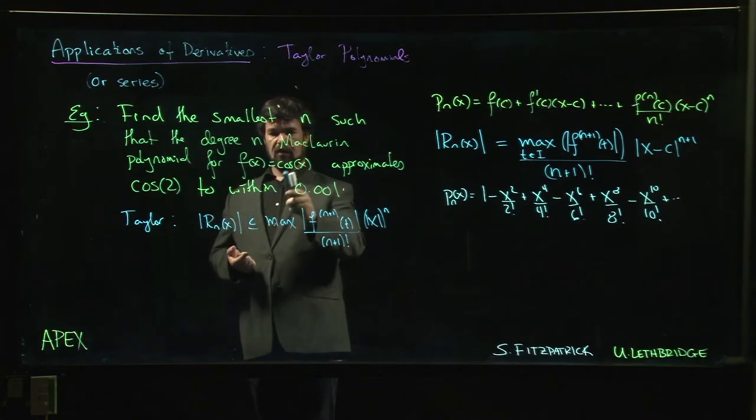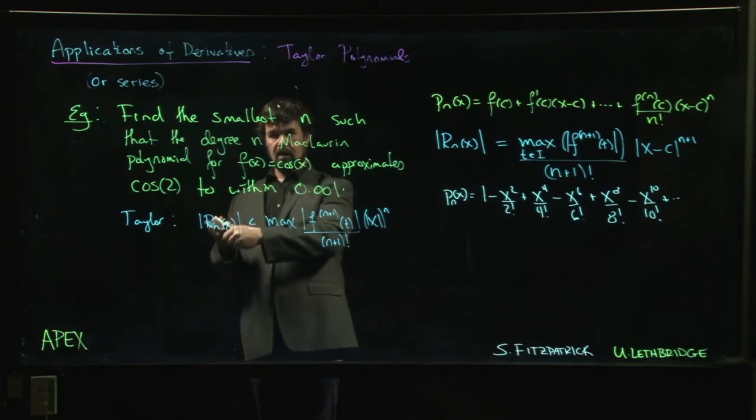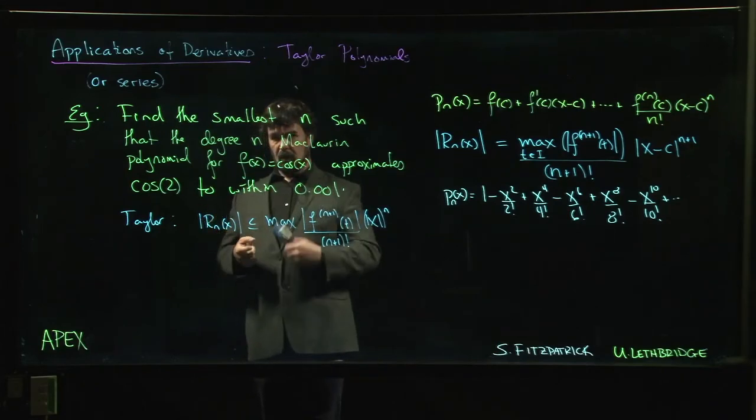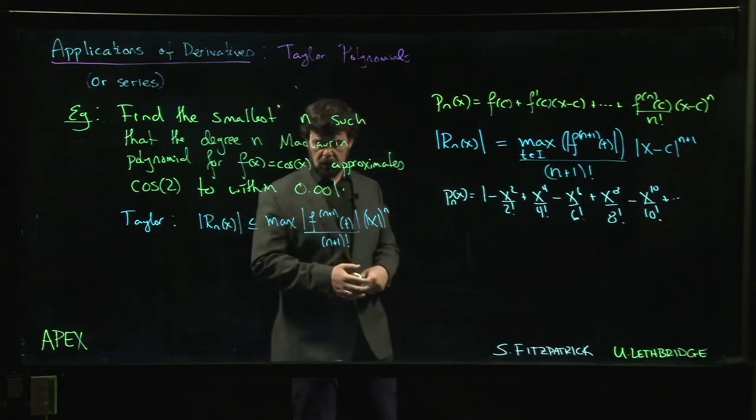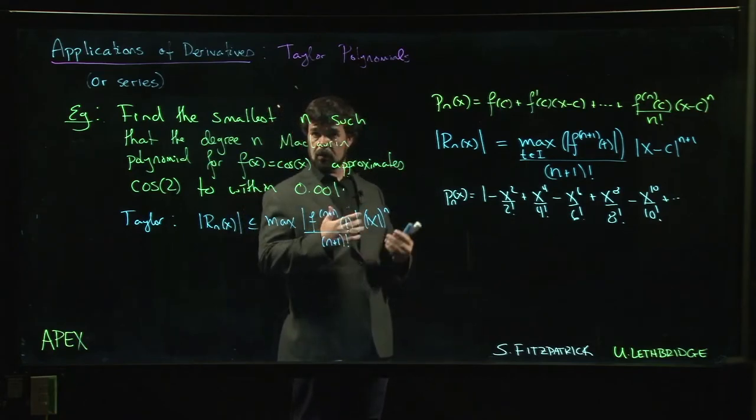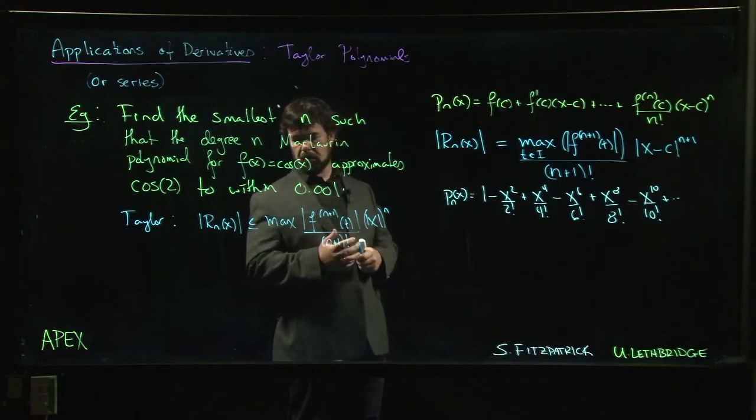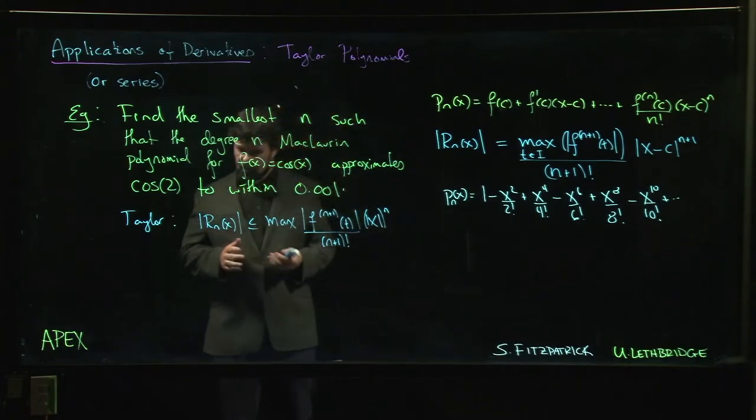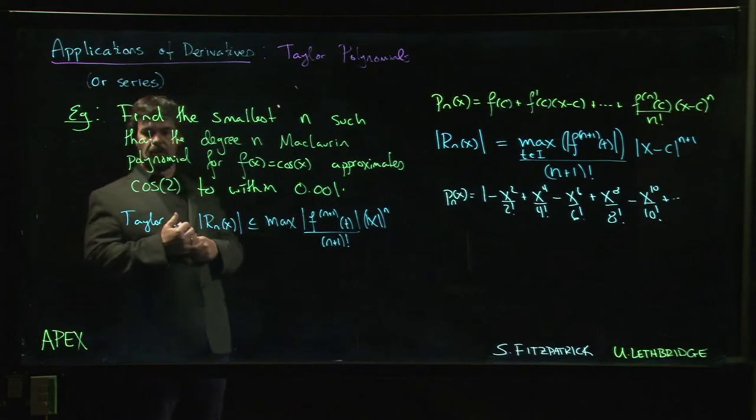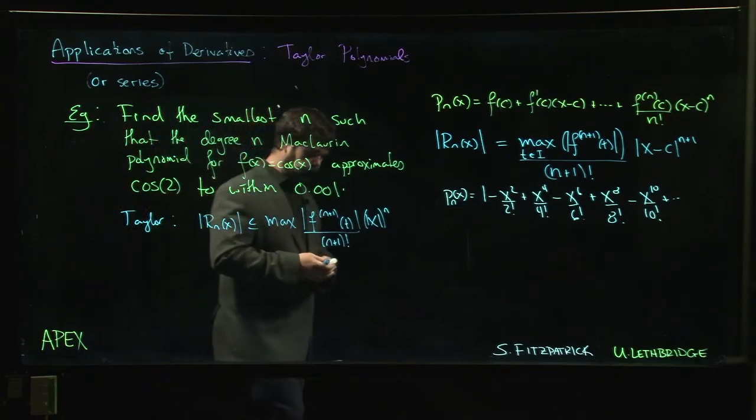Now one of the things that we know here is we know what these derivatives are. It depends on n, but we know that these derivatives cycle. We're going to take the first derivative with negative sine, then negative cos, then positive sine, then positive cos, and then repeat. So every four derivatives it repeats.